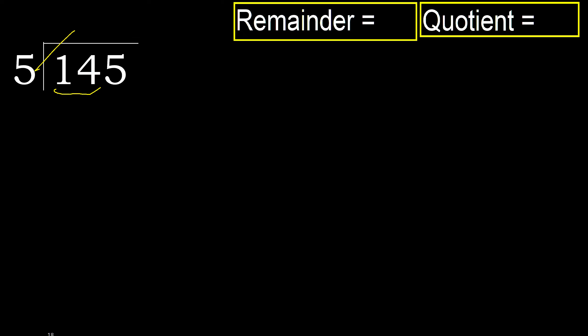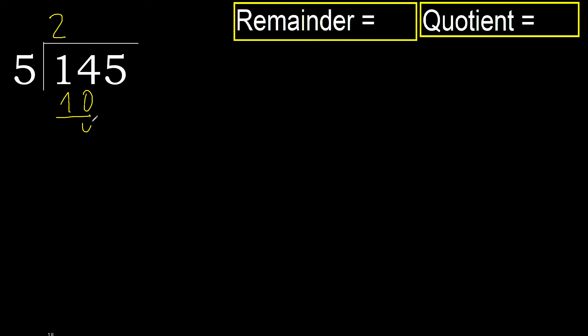5 multiply by which number is nearest to 14 but not greater. 5 multiply by 3 is 15 — 15 is greater. Multiply by 2 is 10 — 10 is not greater. Subtract.